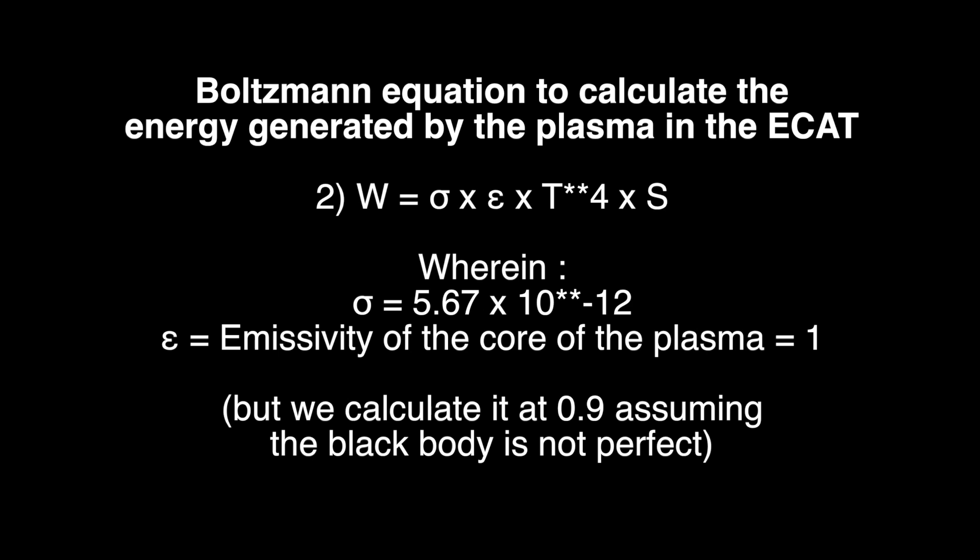Epsilon is the emissivity for the plasma that is the black body. It should be 1, but we calculate 0.9 assuming the black body is not perfect.